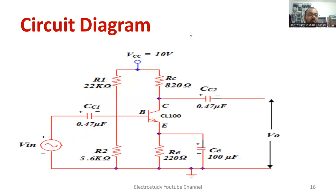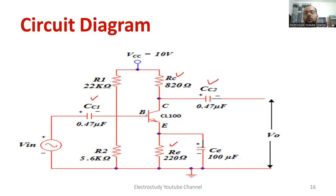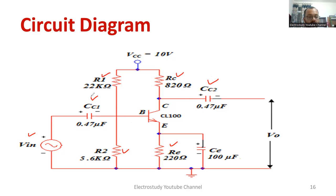I would like to show you the circuit diagram related to this experiment. As you can observe, we have the following passive components: coupling capacitors at the input and output stages, emitter resistor RE, collector resistor RC — these values come from the design which will be covered in a separate video. Then R1 and R2 form the voltage divider. We are using voltage divider biasing. The input is an AC sinusoidal voltage and VCC is 10 volts.